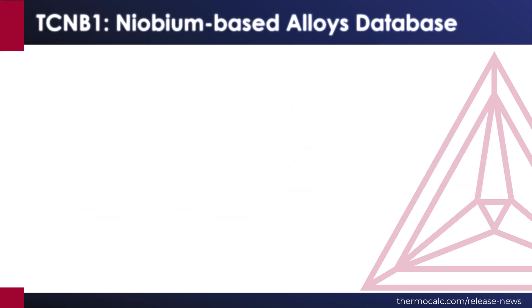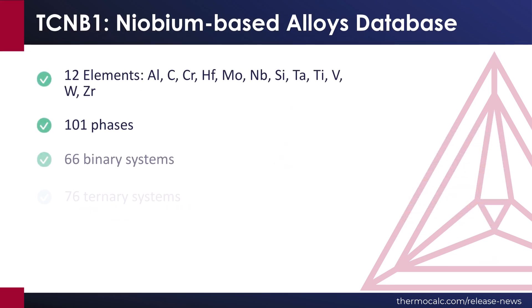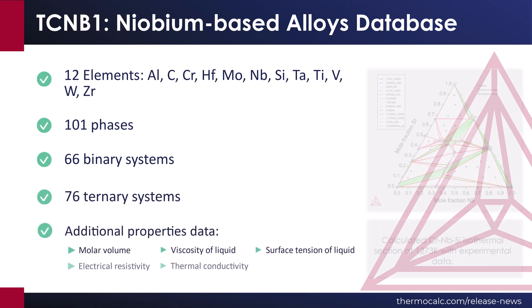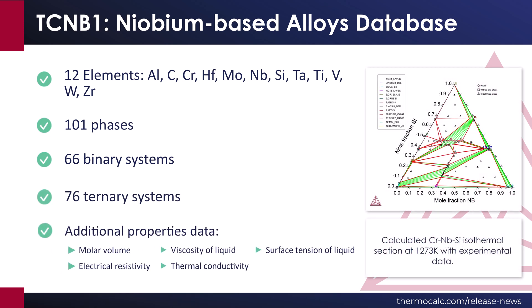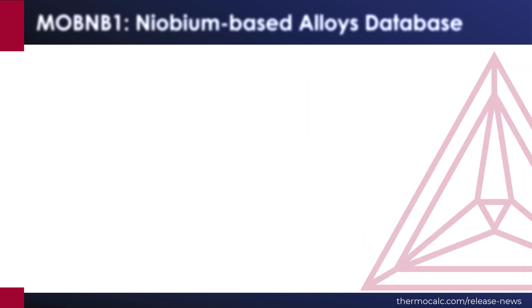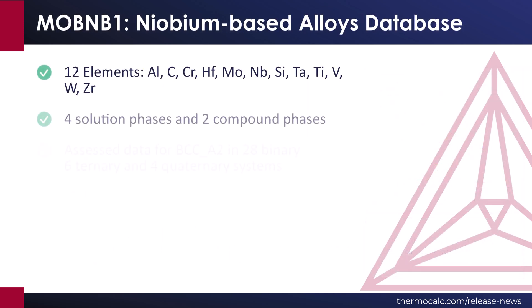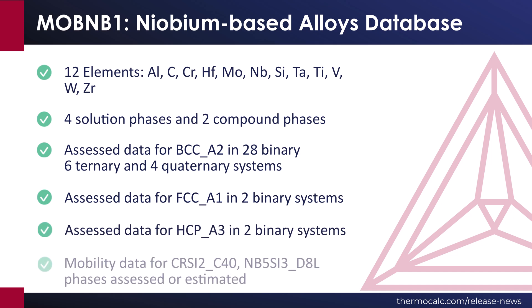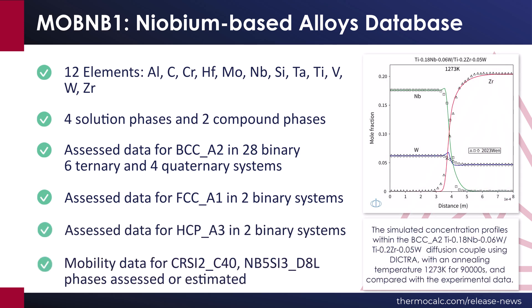TCNB1 includes 12 elements, 101 phases, 66 binary systems, and 76 ternary systems. The database also includes several additional thermophysical properties, as listed on the screen. A companion mobilities database, MOBNB1, is also released to correspond to TCNB1.